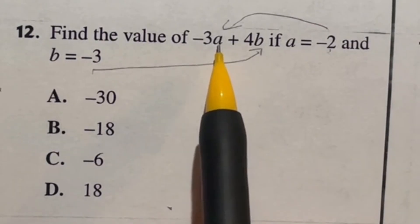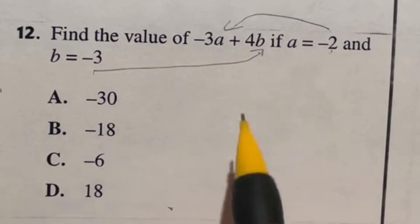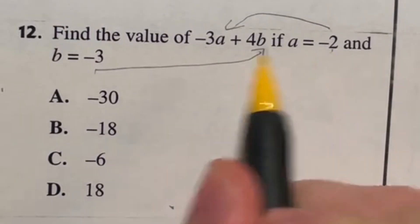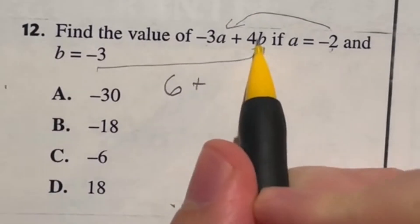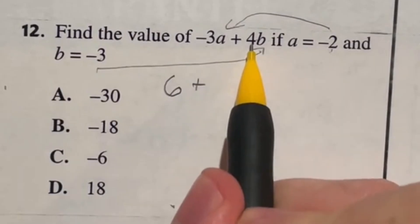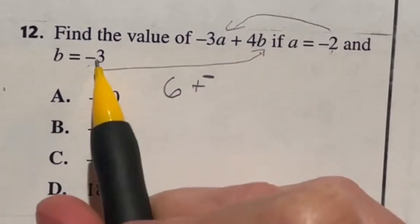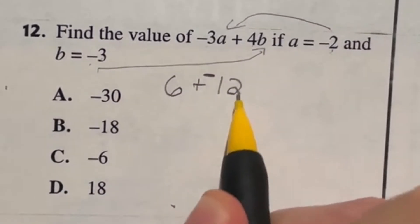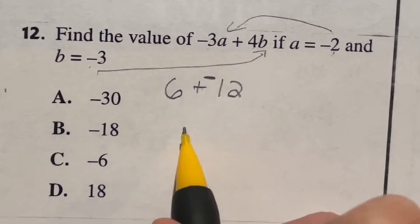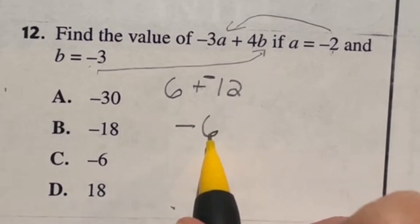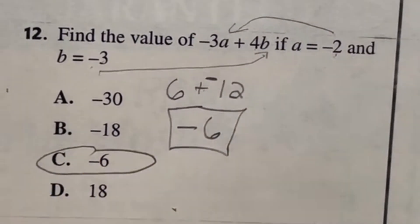Starting with order of operations, we multiply first. A number right next to a letter means multiplication. So we have negative three times negative two — a negative times a negative gives a positive, and three times two is six, so that's positive six. Then we have plus four times negative three — a positive times a negative gives a negative, and four times three is 12. So we're looking at six minus 12, which gives us negative six. Our final answer for question 12 is C, negative six.